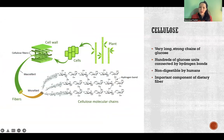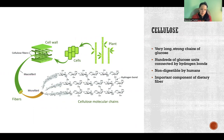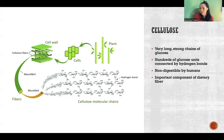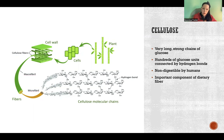Cellulose is a very long, strong chain of glucose. It's made up of hundreds of glucose units connected by hydrogen bonds. These are not digestible by humans — this is the primary component of dietary fiber. When we eat dietary fiber, we don't break it down and absorb it for calories or nutrients. Instead, it just moves through our intestinal tract, which is important — it helps keep everything moving smoothly and helps clean out the inside of our intestines. So dietary fiber is very important.